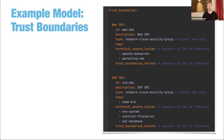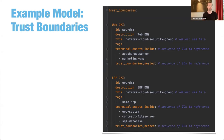Last but not least, the trust boundaries — those boxes used to group and isolate certain components from other parts of your architecture. There are different types you can choose from: network security group, network VLAN, cloud security group, isolation policies, containerized environments, and more. You give it a name, reference the technical assets placed in that trust boundary, and you can also nest them to have nested trust boundaries like a cloud network with certain cloud security groups within it.